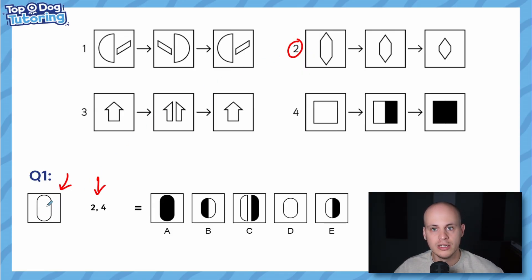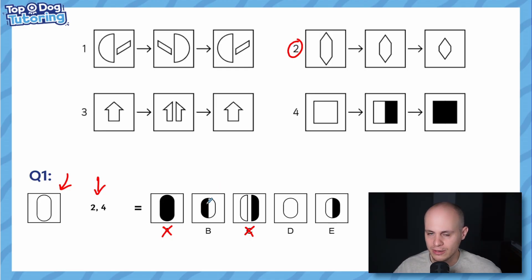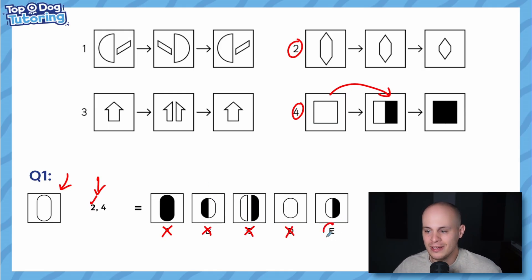Applying operation two means squishing the shape vertically, so it becomes shorter. I can immediately eliminate A and C because they show the full-size shape — we want something like B, D, or E. Then we apply operation four, which shades the right-hand half black. B is shaded on the left — good trap. D isn't shaded at all. So the answer is E.